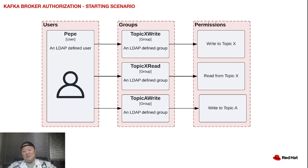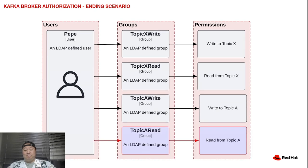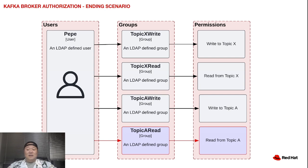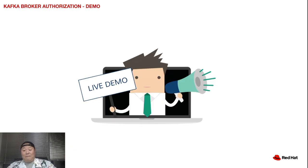For the sake of simplicity, the group-to-permission naming scheme has been purposely made self-explanatory. We see that Peppy can read and write topics that start with the letter X, but can only write topics that start with the letter A. Peppy is greedy and wants to read those A topics too. Luckily, we have a group, resources, policy, and permissions supporting that need — we just need to add Peppy to the topic-A-read group. Let's go ahead and demonstrate how to do that using LDAP.